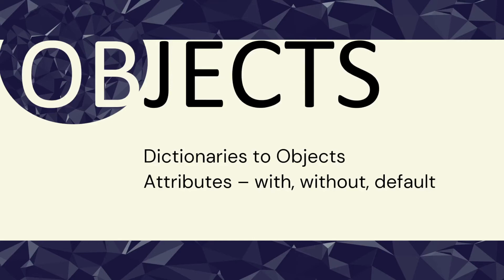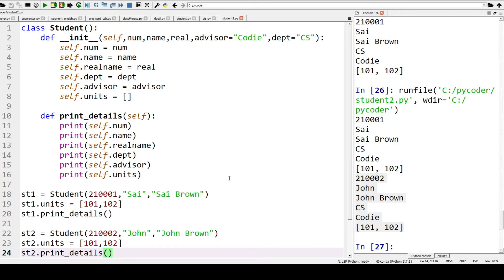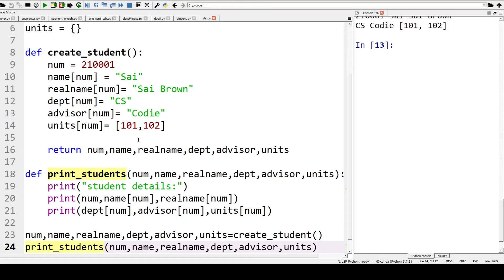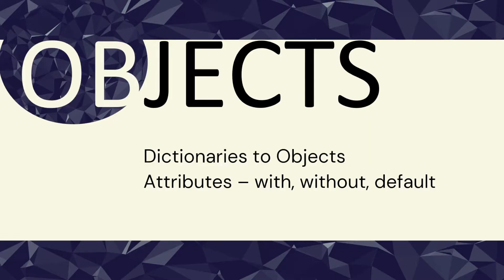In this video we're not only going to create student objects and use attributes with default values, but we're going to show you exactly why by creating first the student using dictionaries and then seeing how we can do it with objects. By the end of this video you will not only understand how to create student objects but you will fully understand why we do.